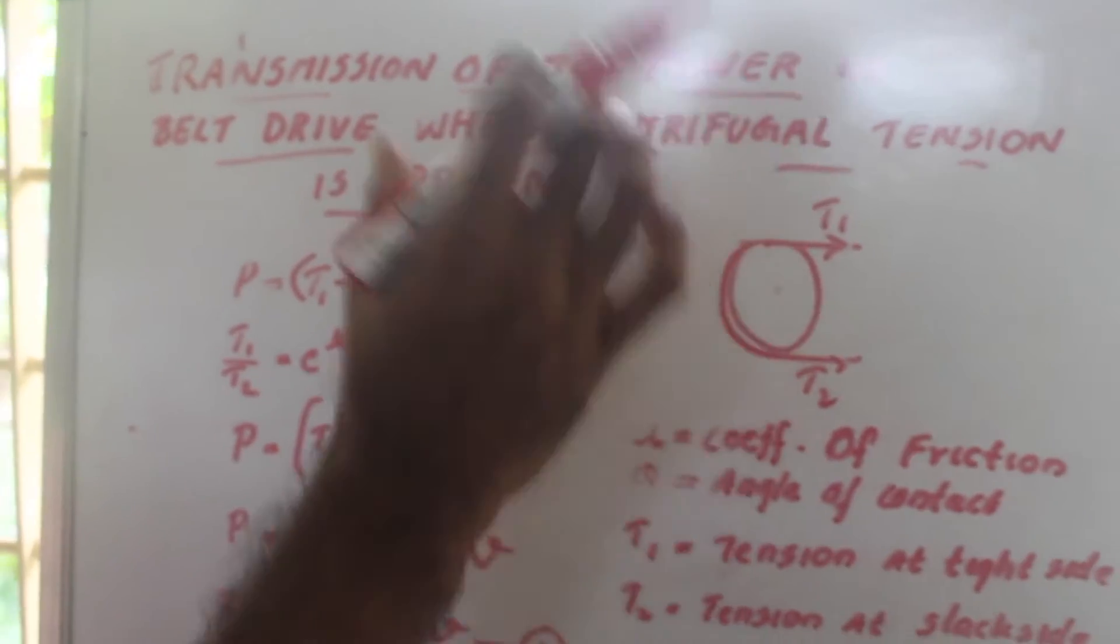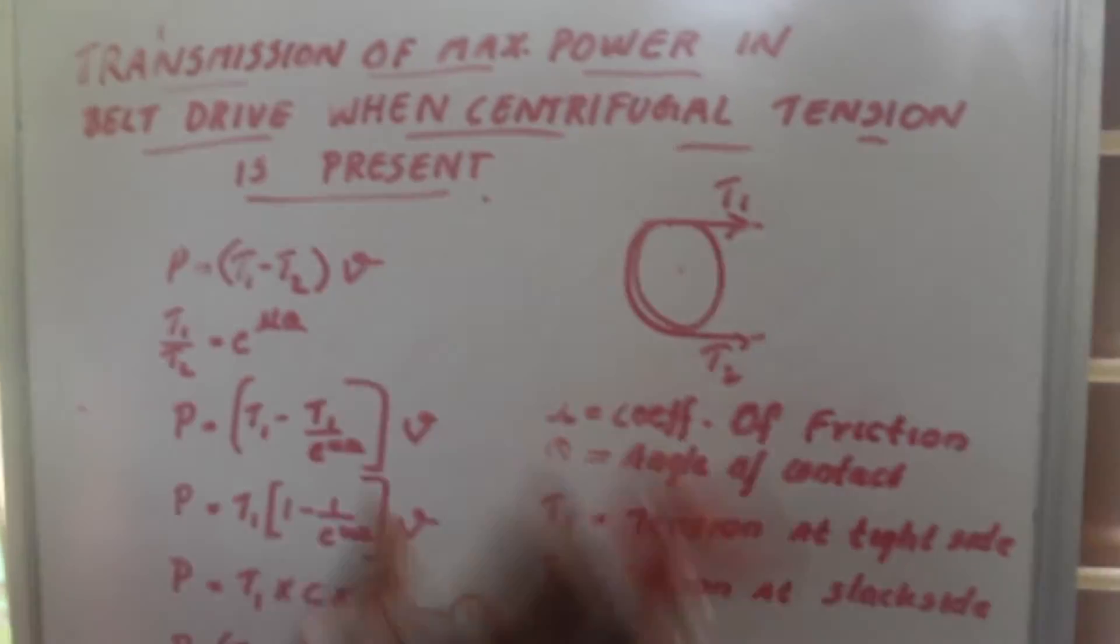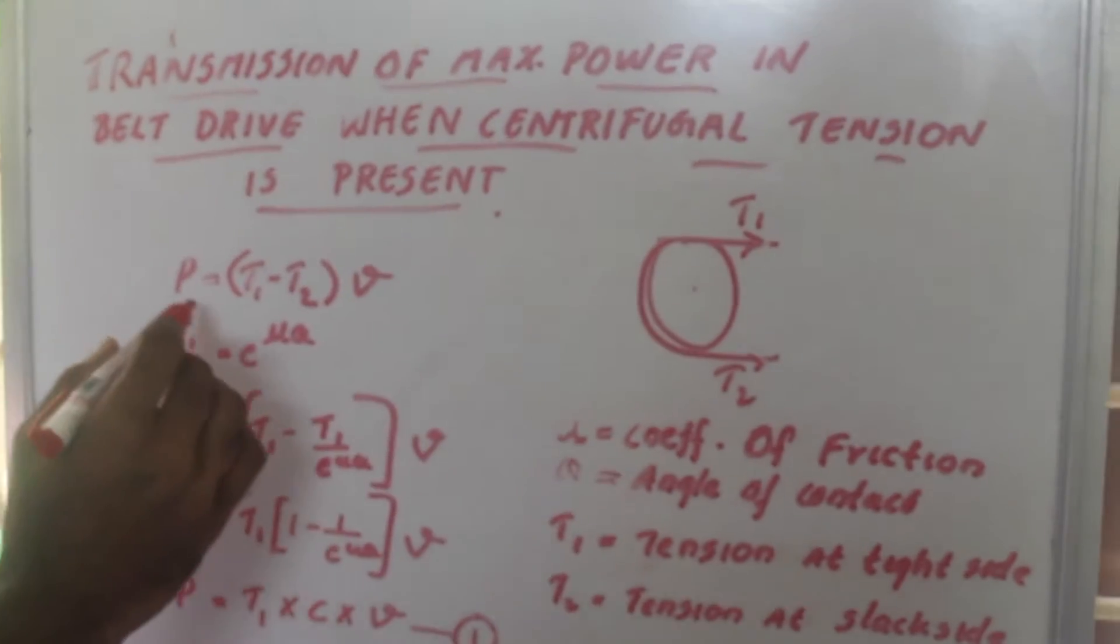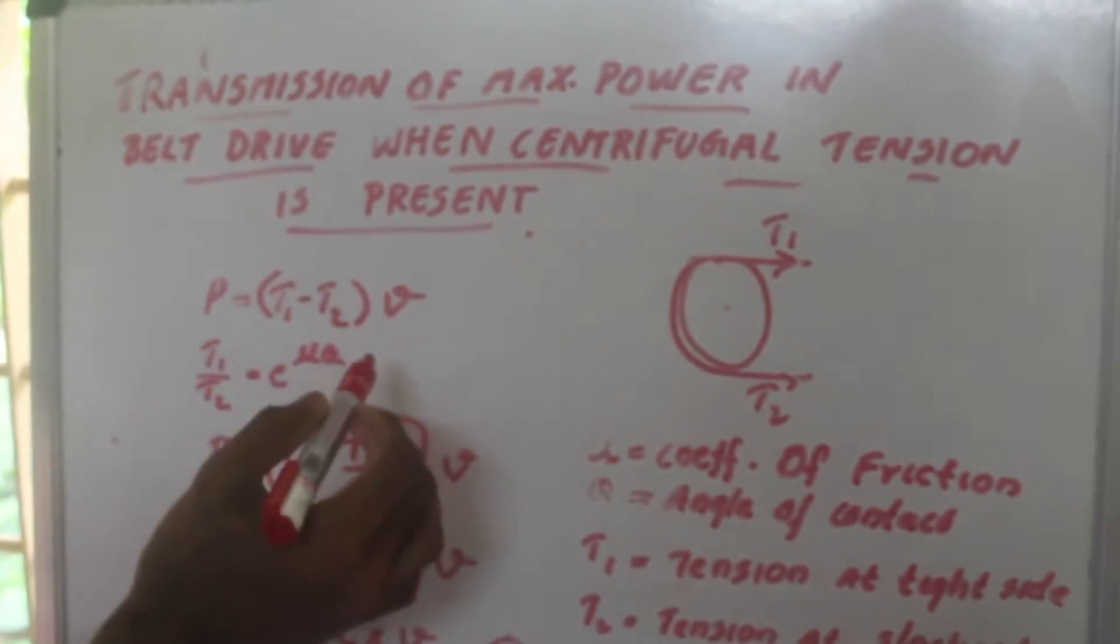The effect of centrifugal force is to increase the tension on both sides. For finding power, we know that power is equal to the difference in tension times velocity.